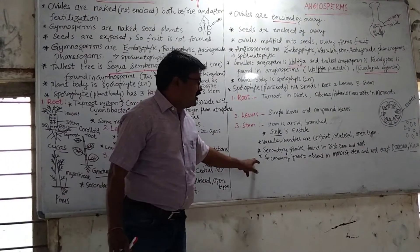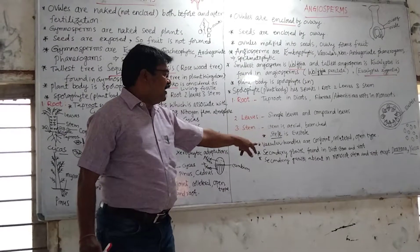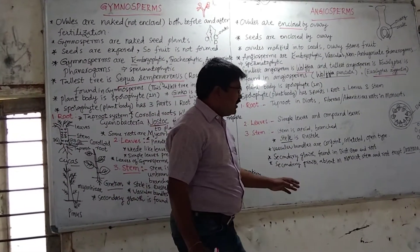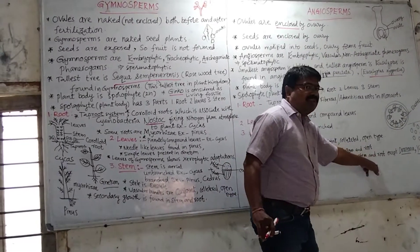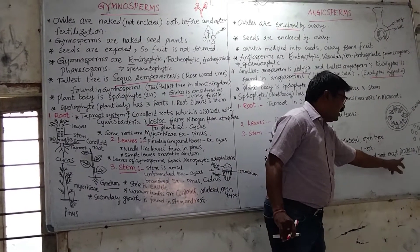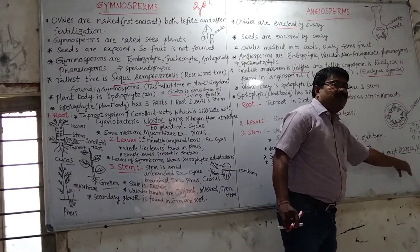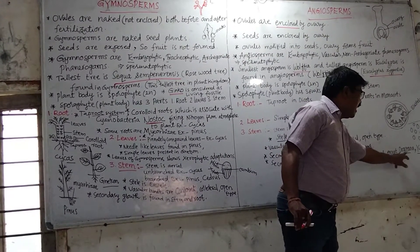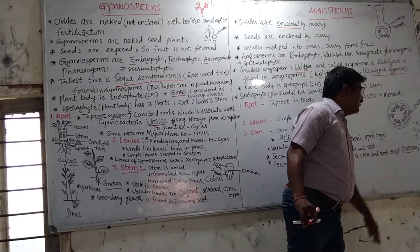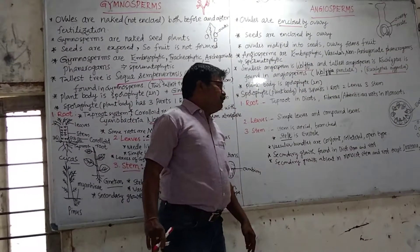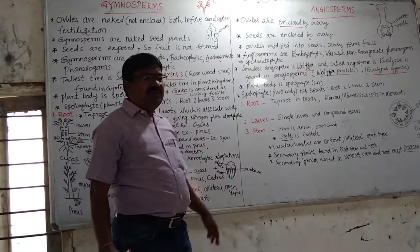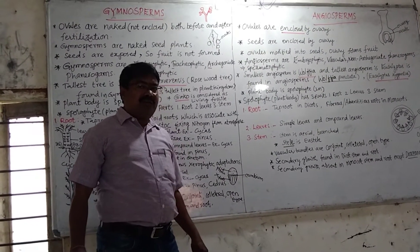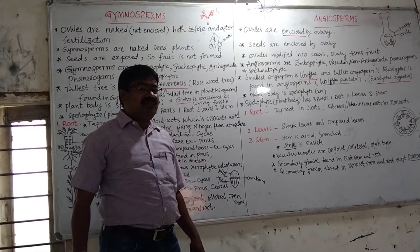Secondary growth is present in roots and stems of gymnosperms. In angiosperms, secondary growth is absent in monocots, except in Dracaena and Yucca. In Dracaena and Yucca, secondary growth occurs as anomalous secondary growth development — also called abnormal secondary growth.